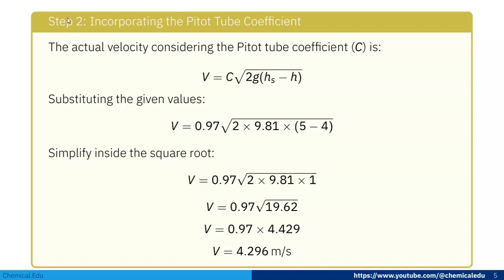Step 2: Incorporating the Pitot tube coefficient. The actual velocity considering the Pitot tube coefficient C is: V = C√(2g(h_s - h)). Substituting the given values: V = 0.97√(2 × 9.81 × (5 - 4)).